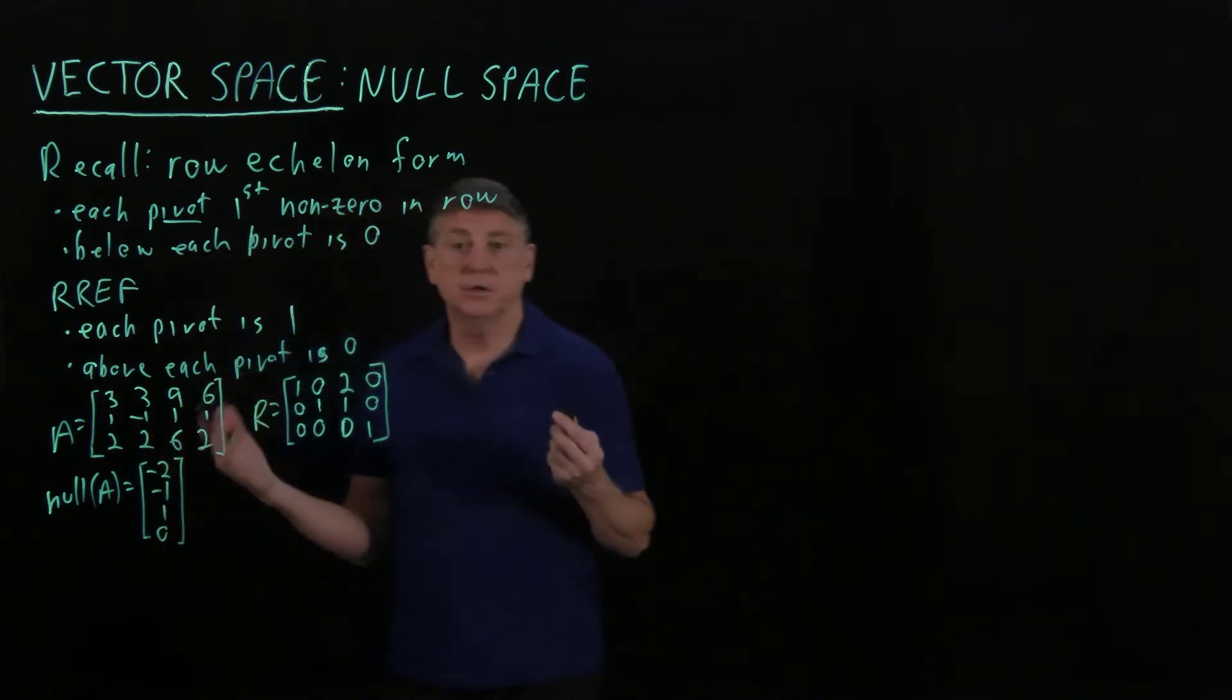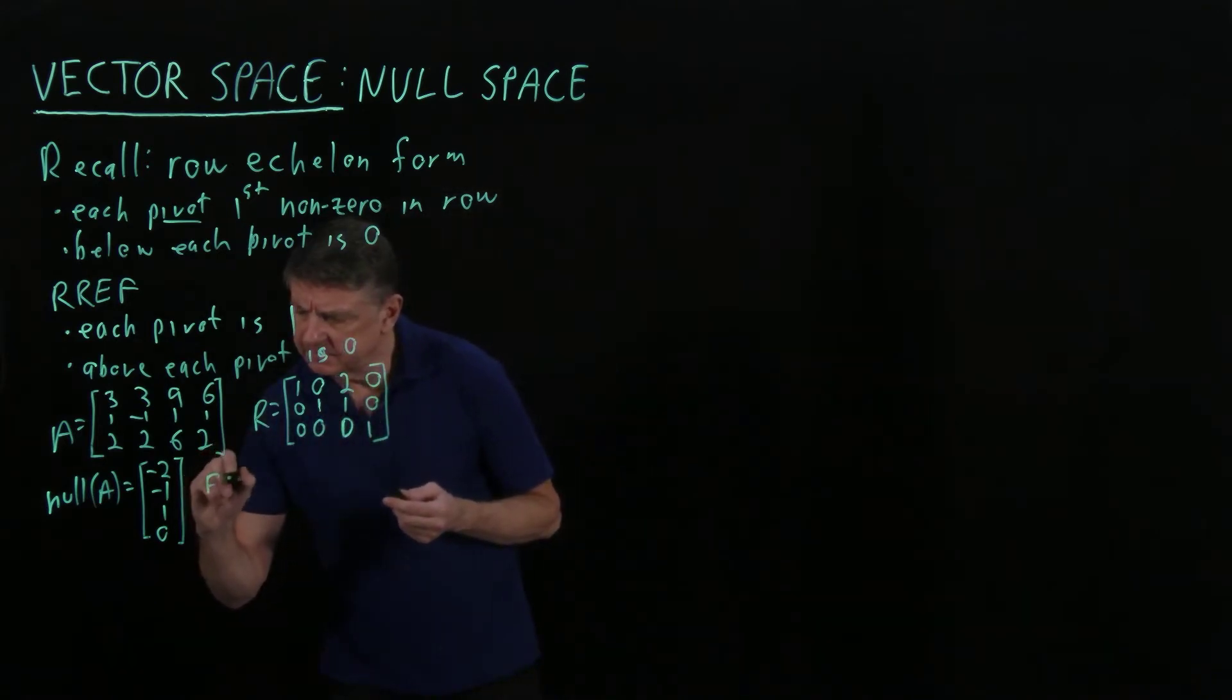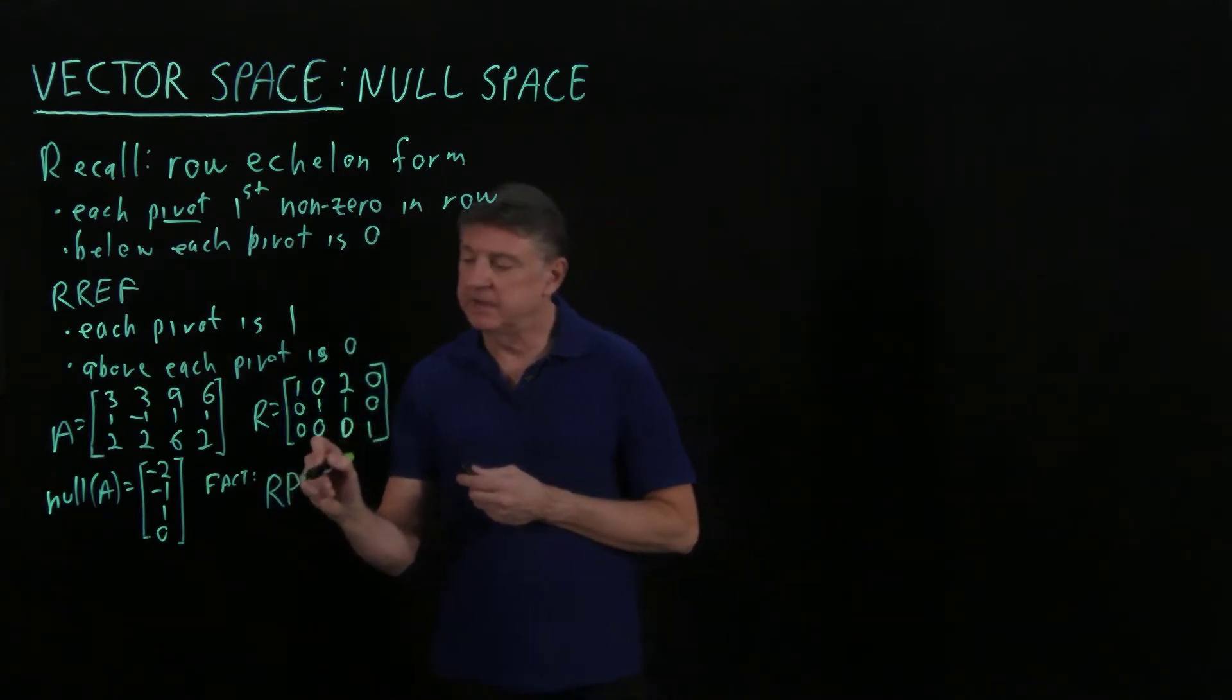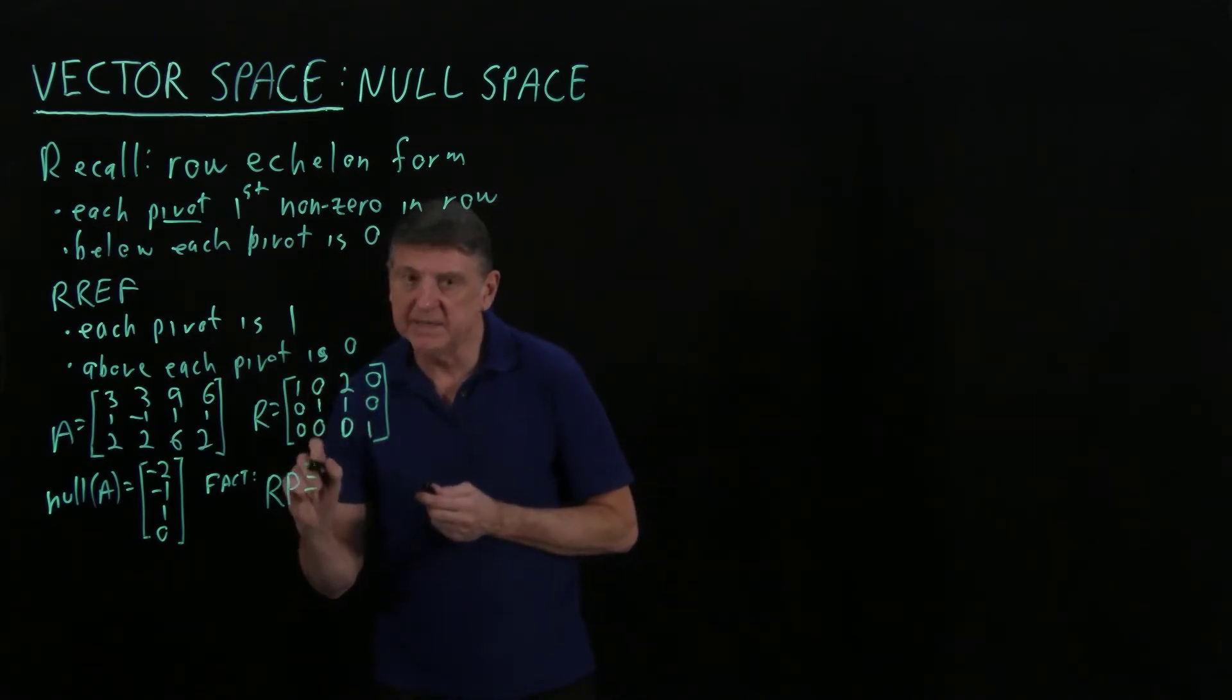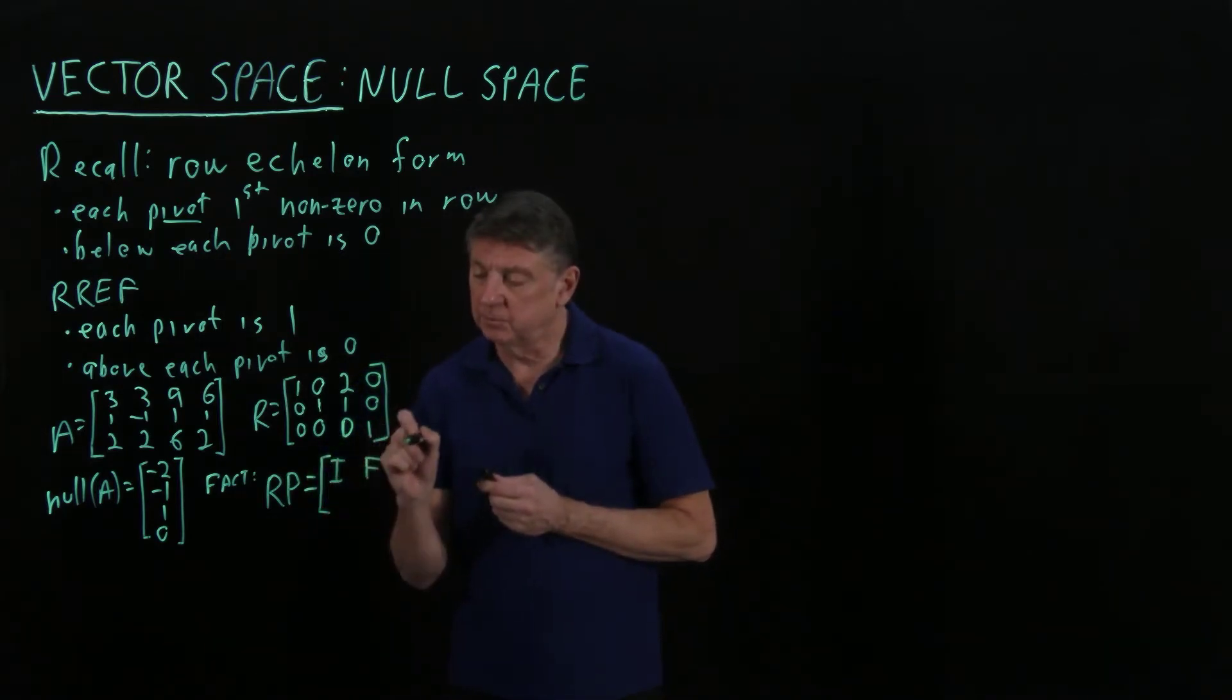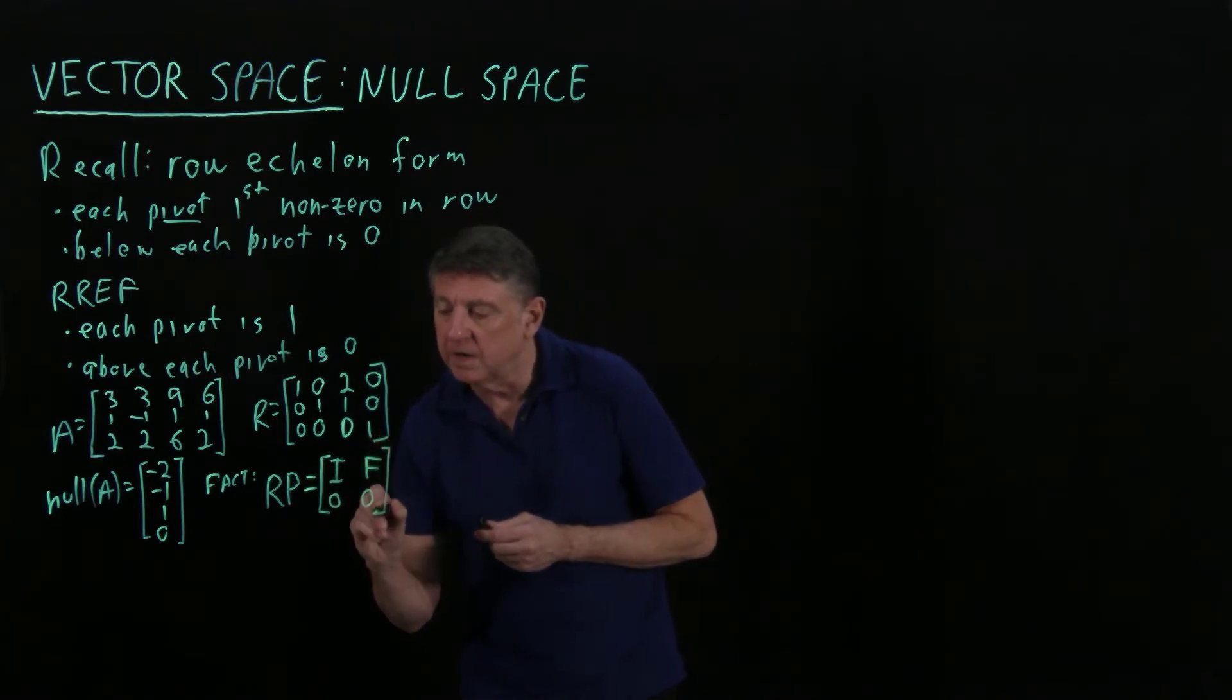And I have a useful algorithm for finding the null space from the RREF, and this involves a fact—a theorem that I'm not going to prove right now. The fact is that we can always represent the RREF using a permutation matrix, so that's all 0s and 1s with determinant 1. If we take the RREF and permute the rows and columns, I can get this into a form where I get the identity in the upper left corner, some factor F in the upper right corner, and possibly one or more rows of zeros below. That's the general form of an RREF.